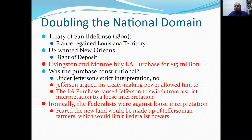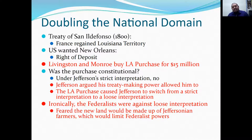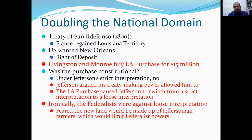Ironically, the Federalists were against this loose interpretation of the Constitution. They feared that the new land would be filled with Jeffersonian farmers and Democrat-Republicans, limiting Federalist power. They feared that doubling the size of the United States would introduce and entrench Jeffersonian ideals, causing the Federalists to fade away — which they kind of did.